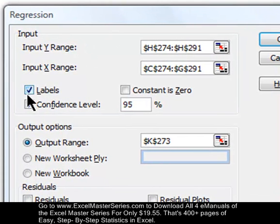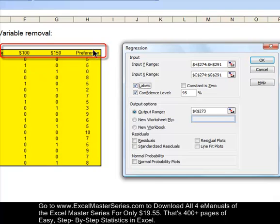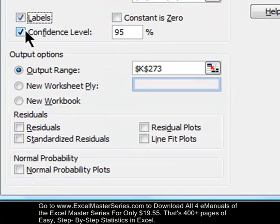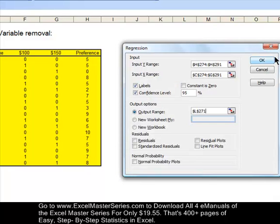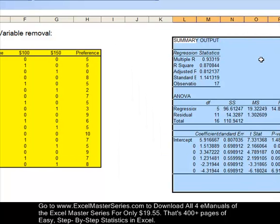Now we're going to check whether or not we have labels with the data. Yes, we do. You see those are the labels, so we check that box. And confidence interval, typically 95% is a standard confidence interval, so leave that checked. And the output range, just select the cell where you want the upper left-hand corner of the output to start. Now hit OK, and you'll run your regression.